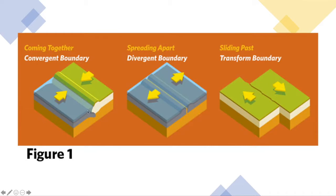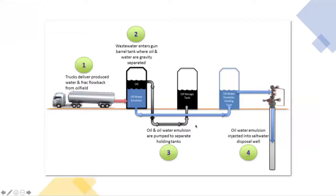So again, these are three different types of plate interactions: convergent boundary, divergent boundary, and transform boundary. Now, related to human-induced earthquakes and hydraulic fracturing, a lot of you have had questions on that.